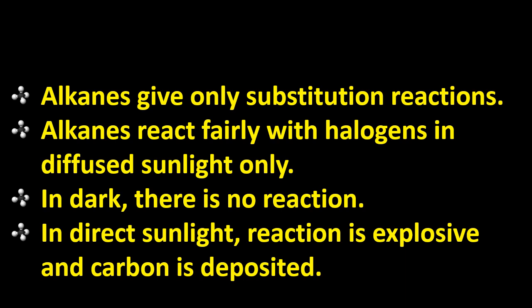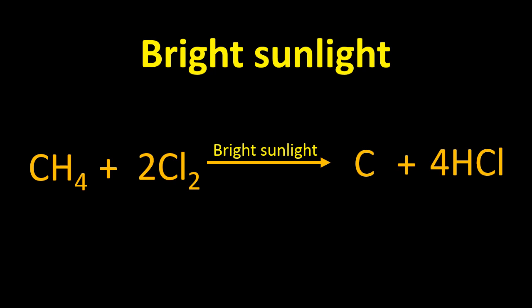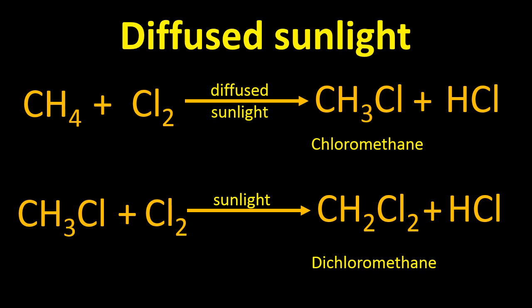Alkanes react with halogens in diffused sunlight. In the dark there is no reaction. In direct sunlight the reaction is explosive and carbon is deposited, so most halogenation reactions take place in the presence of diffused sunlight. In bright sunlight, methane reacts with chlorine but we get deposited carbon and hydrochloric acid — it is explosive. In diffused sunlight, the reaction occurs in steps: methane reacts with chlorine, a substitution reaction takes place, and chloromethane is formed.